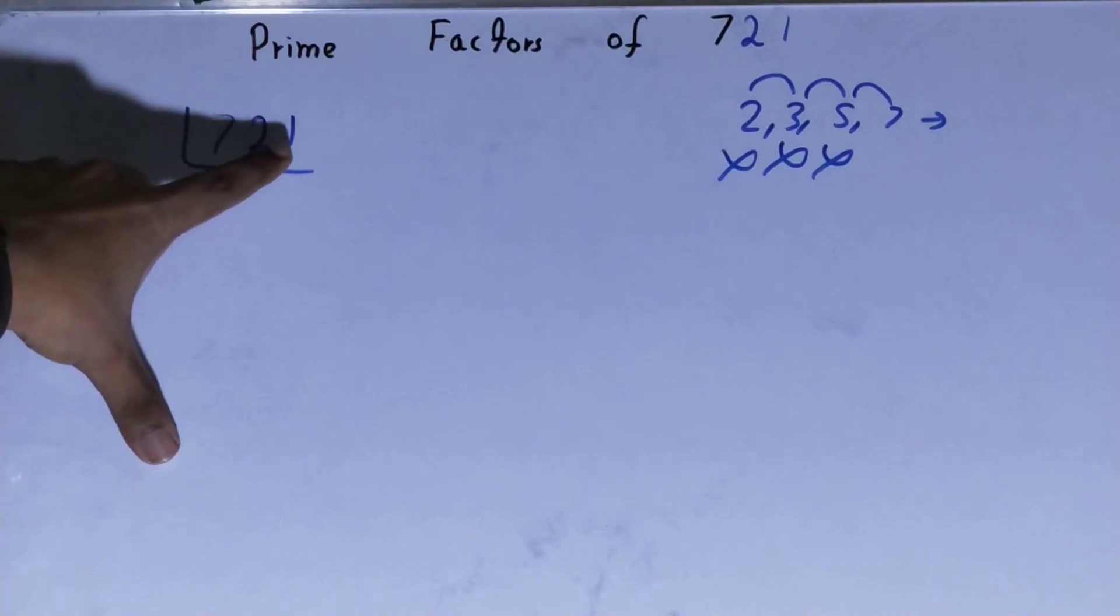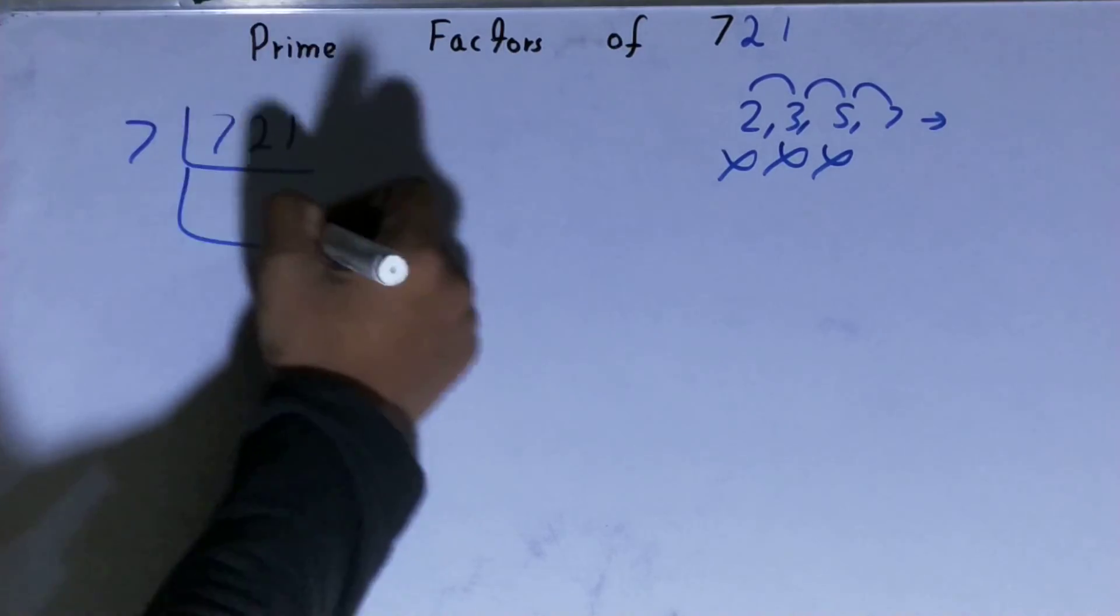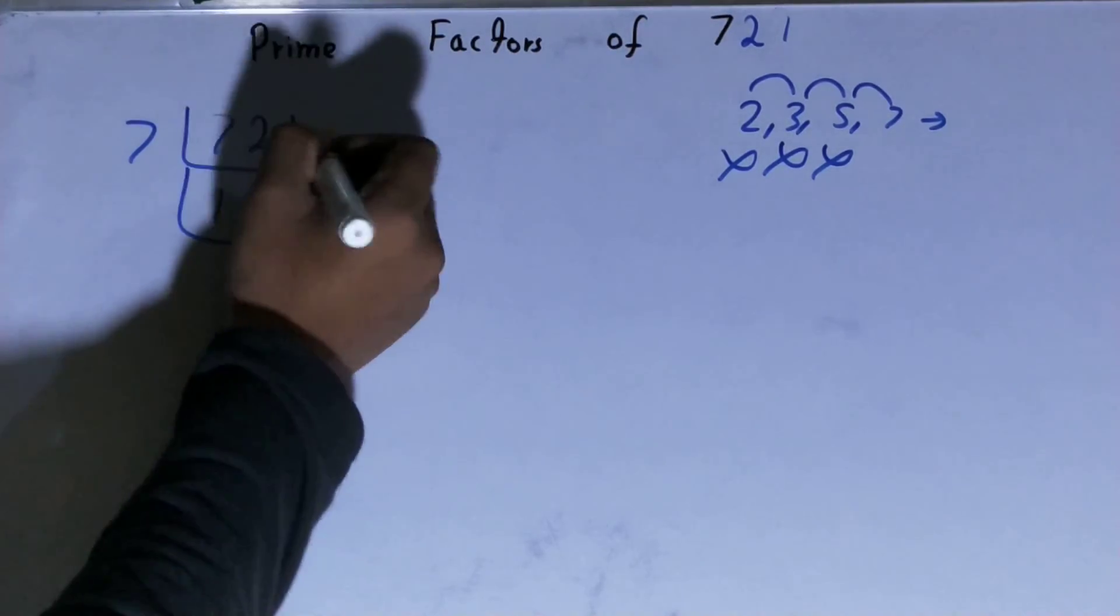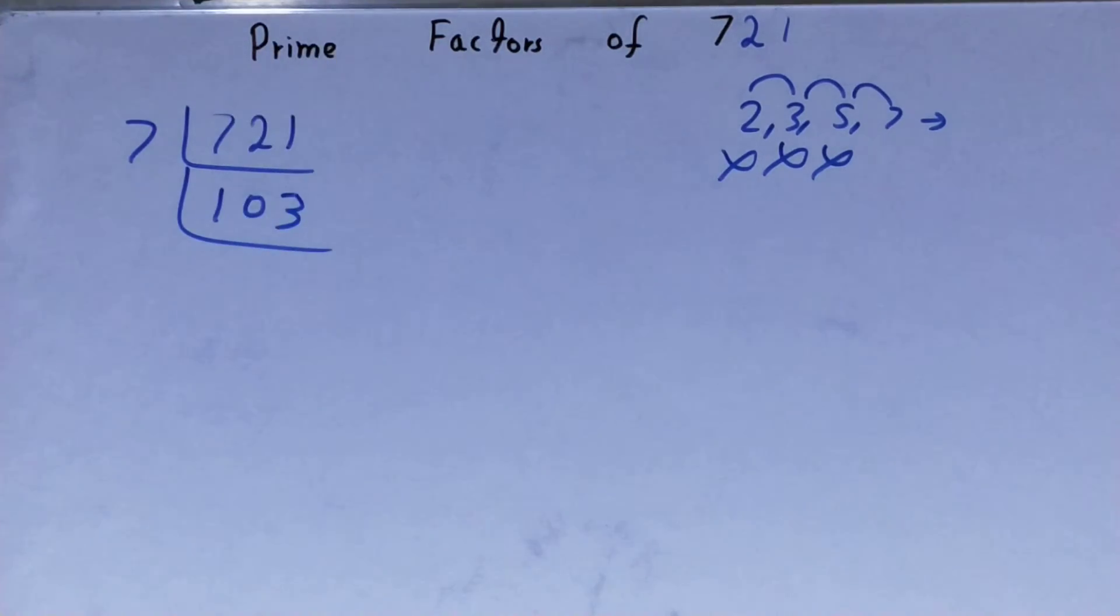7, 0, 7, 3 is 21. Yes, it is divisible with 7. So divide it: 7, 1, 0, 2 left, 2, 1, 7, 3 is 21, right? You'll be left with 103.